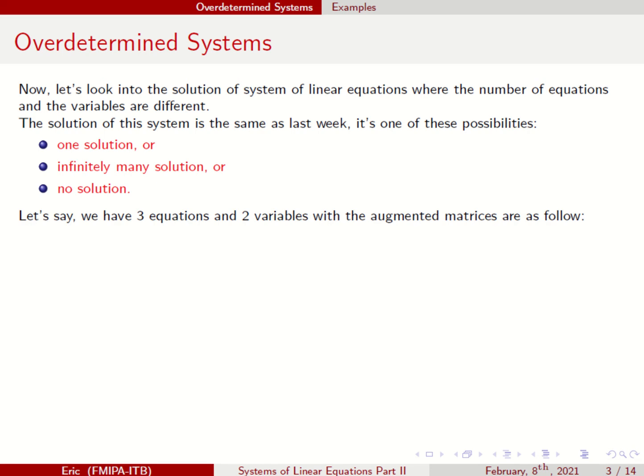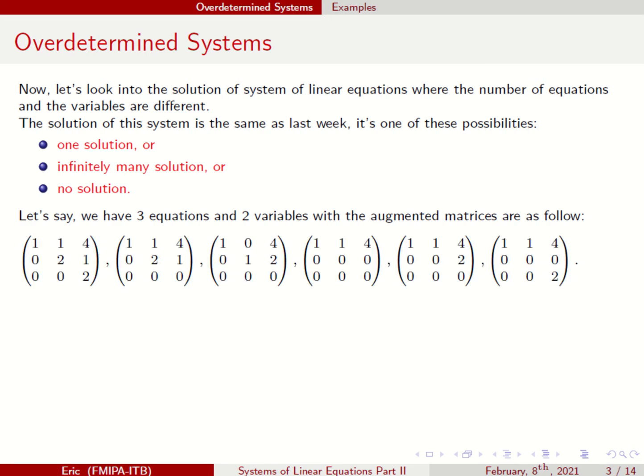Let's say we have three equations and two variables, with the augmented matrix given as follows. If the variables are X and Y, you have: X plus Y equals 4, 0X plus 2Y equals 1, and 0X plus 0Y equals 2 — that gives no solution. What about this one? X plus Y equals 4, 0X plus 2Y equals 1, 0X plus 0Y equals 0.